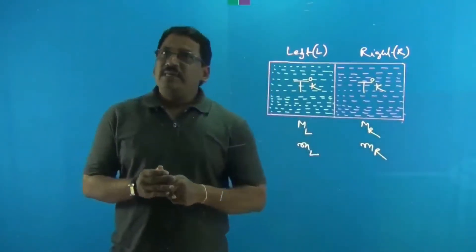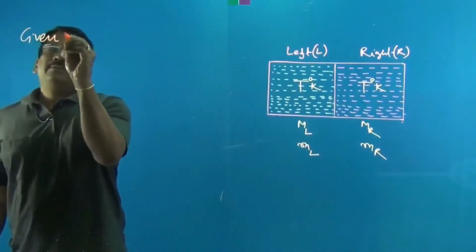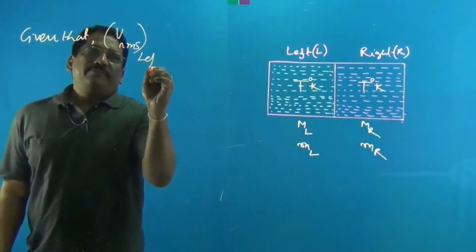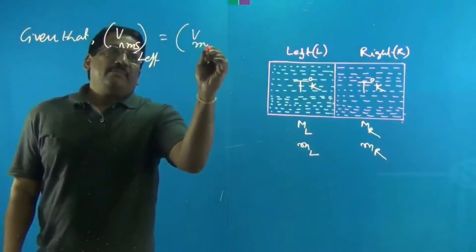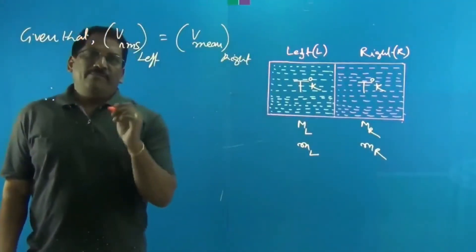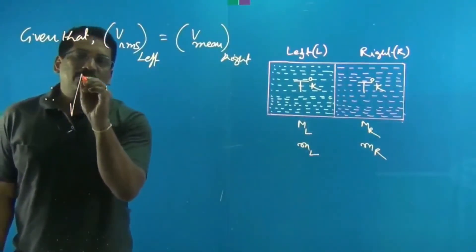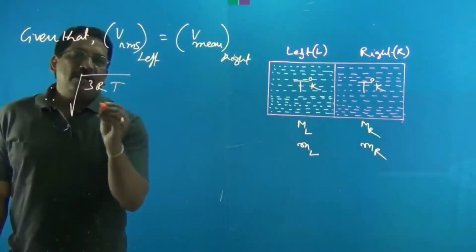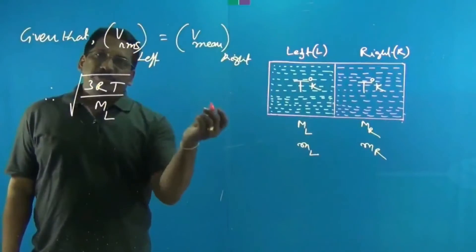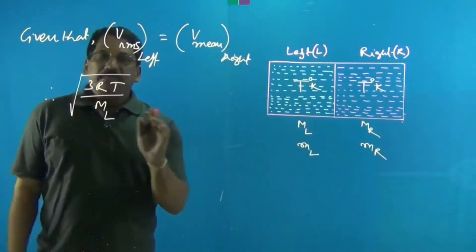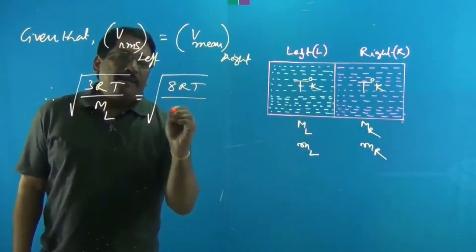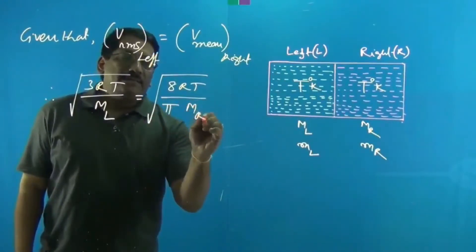Let's equate the given expressions: V_RMS(left) = V_mean(right). The formula for RMS speed is √(3RT / M_L), where M_L is the molecular weight of the left gas and T is the absolute temperature. Since the separator is diathermic, temperature is the same on both sides. This equals √(8RT / π·M_R), where M_R is the molecular weight on the right side.